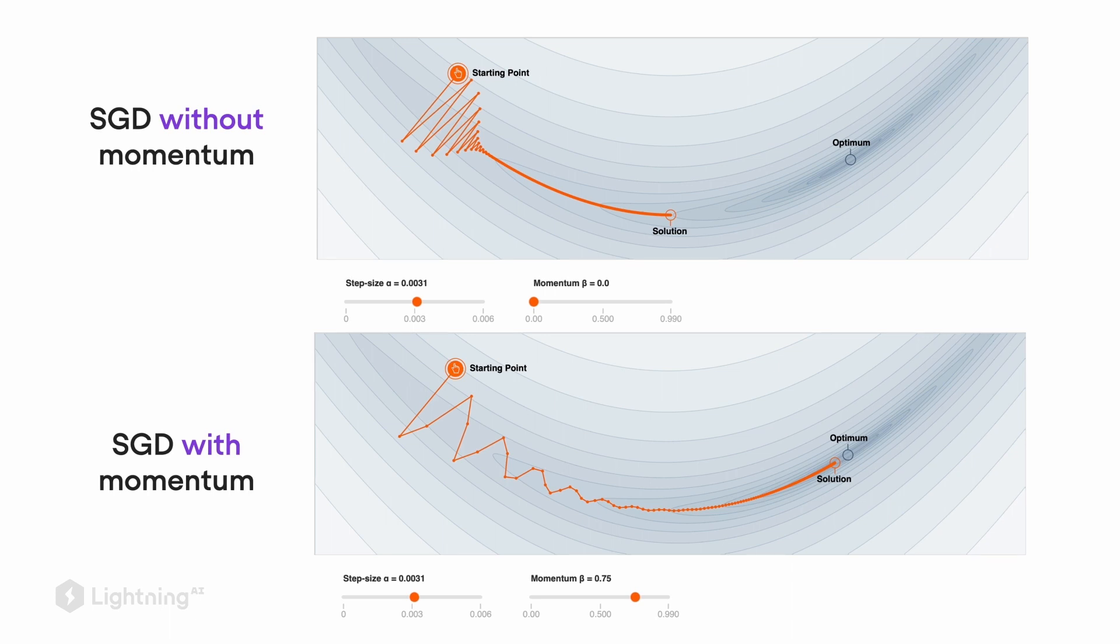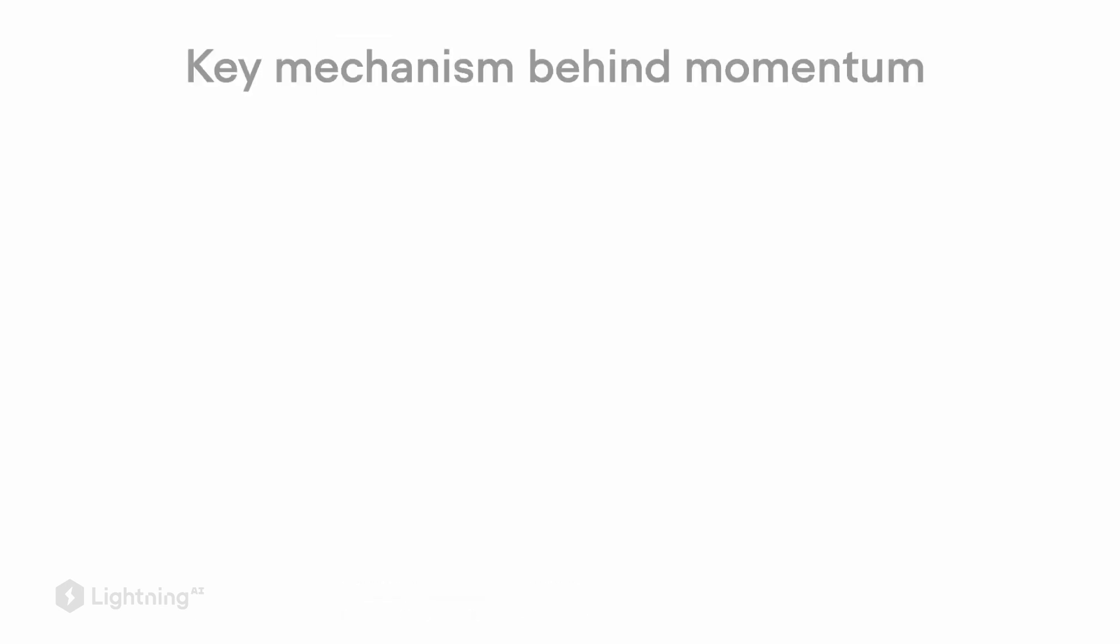Just for reference, we have here the Stochastic Gradient Descent procedure at the top without the momentum term and at the bottom with the momentum term. You can see that the momentum term kind of dampens these oscillations, pushing the optimization procedure in the right direction.